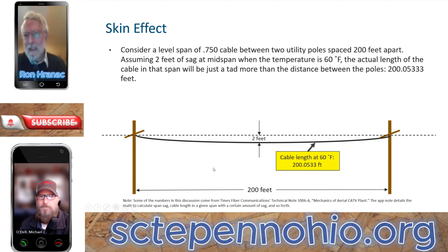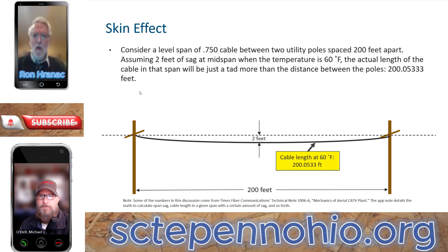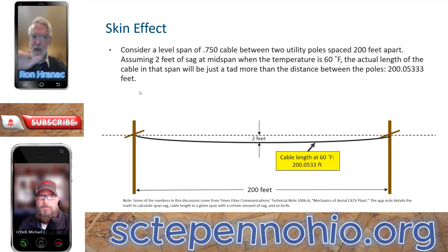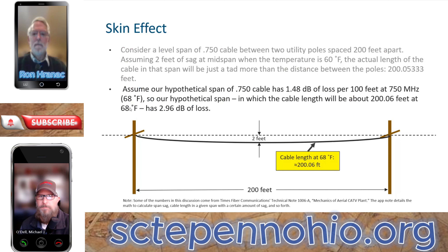Those numbers come from an old Times Fiber Communications technical note referenced at the bottom of the slide, which discussed this whole phenomenon and included equations to calculate the length changes over temperature. So at 60 degrees Fahrenheit, the length of that cable in a 200-foot span with two feet of sag is just a smidgen over 200 feet. At 68 degrees Fahrenheit, the cable length is about 200.06 feet versus 200.05 feet — a hundredth of a foot difference over that eight-degree temperature swing.